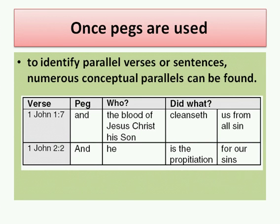Once pegs are used to identify parallel verses, sentences, or phrases, there are several conceptual parallels found. We've presented this information in a slightly different way — you'll see: verse, peg, who, did what. So chapter 1 verse 7: the peg is 'and,' who — 'the blood of Jesus Christ, His Son,' did what — 'cleanseth us from all sin.' In chapter 2 verse 2: the peg is 'and,' who — 'he,' did what — 'is the propitiation for our sins.' And so you can see the pegs clearly defining the meaning of the word, and what a cleansing it is.